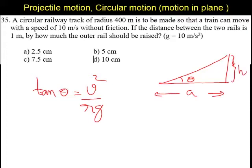From this triangle, tan θ equals opposite by adjacent ratio. So it is given as h by a. Comparing these two, h by a equals v squared by rg.